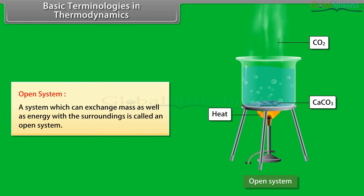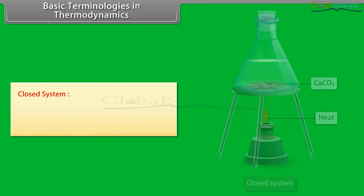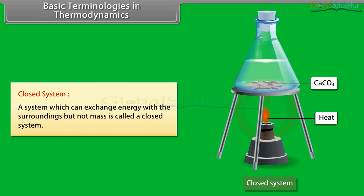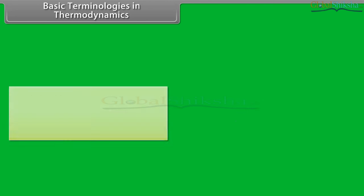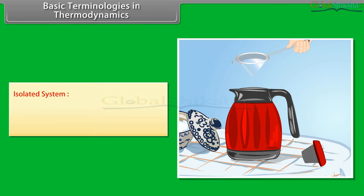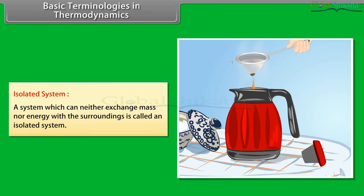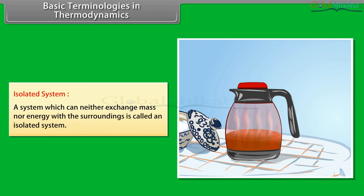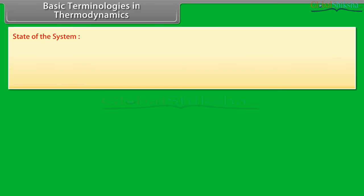Open system: a system which can exchange mass as well as energy with the surroundings is called an open system. Closed system: a system which can exchange energy with the surroundings but not mass is called a closed system. Isolated system: a system which can neither exchange mass nor energy with the surroundings is called an isolated system.